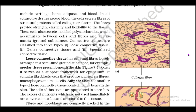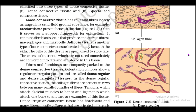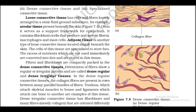These cells also secrete modified polysaccharides which accumulate between cells and fibers and act as matrix or ground substance. Connective tissues are classified into three types: loose connective tissue, dense connective tissue, and specialized connective tissues. Loose connective tissue has cells and fibers loosely arranged in a semi-fluid ground substance; for example, areolar tissue present beneath the skin (figure 7.4). It often serves as a support framework for epithelium and contains fibroblast cells that produce and secrete fibers, macrophages, and mast cells.